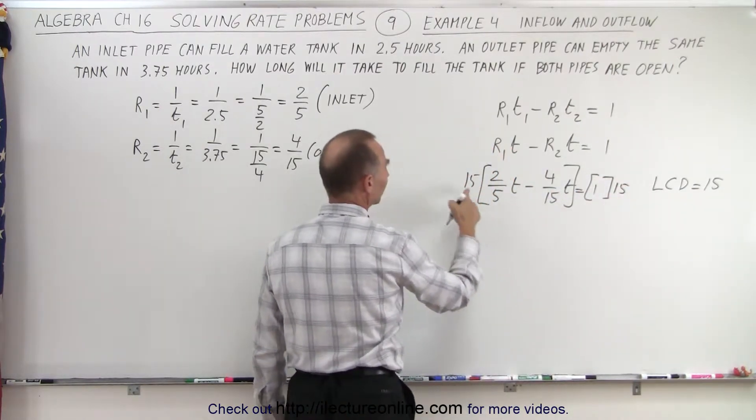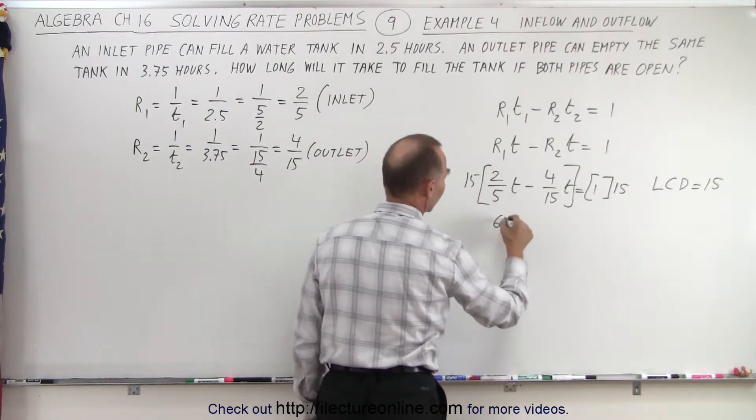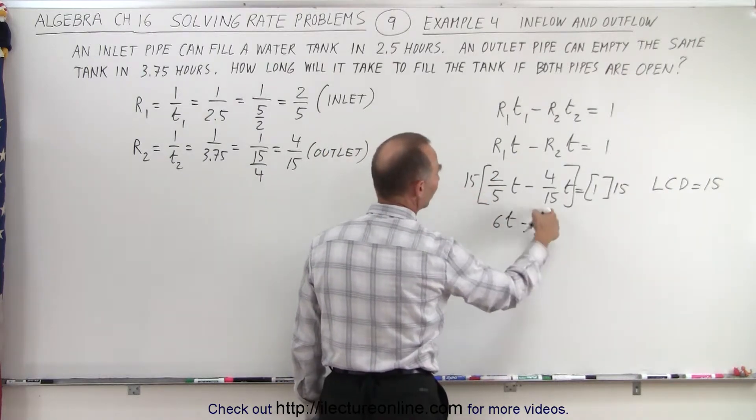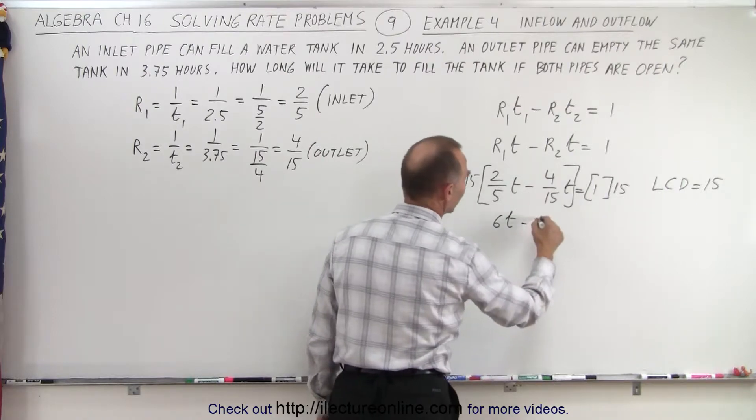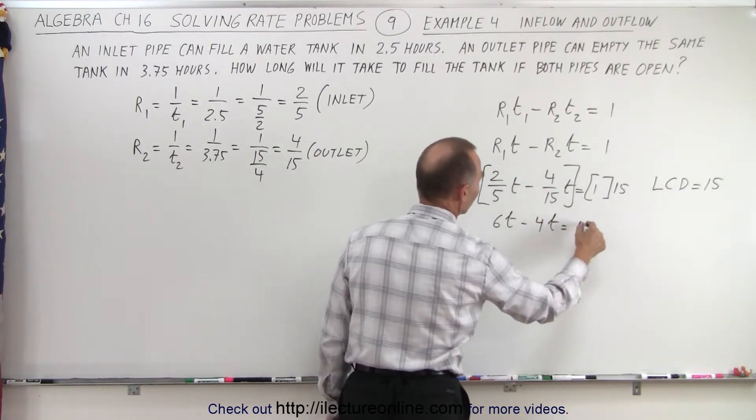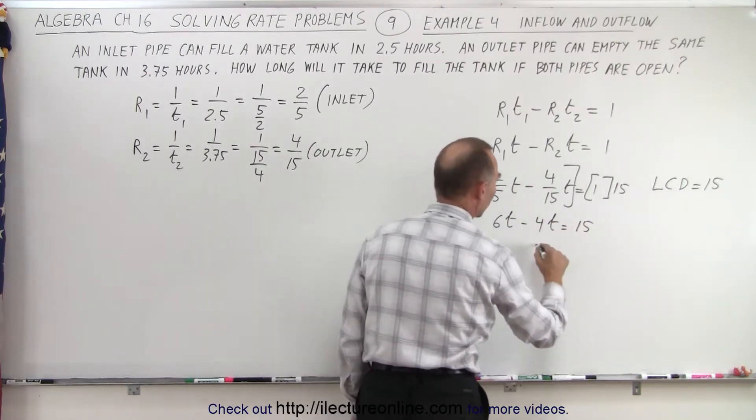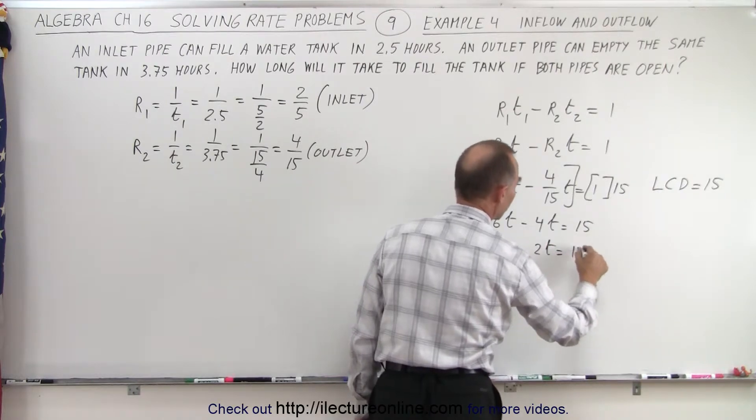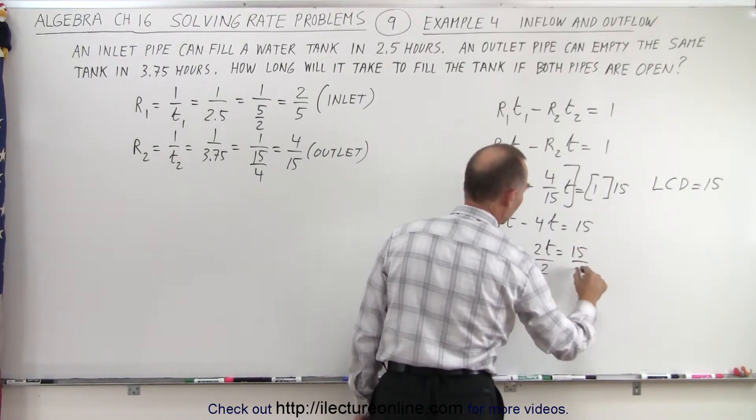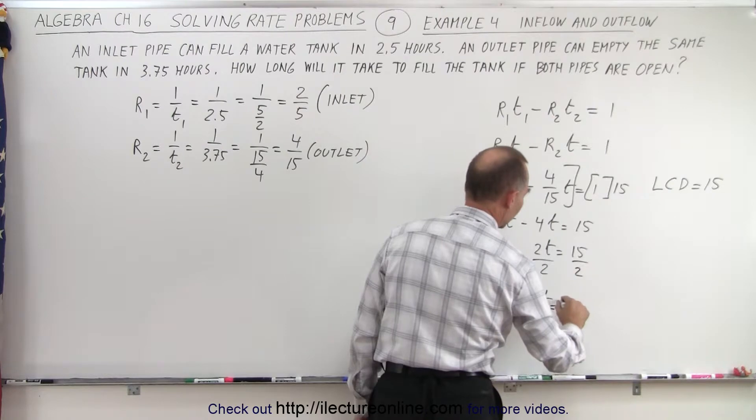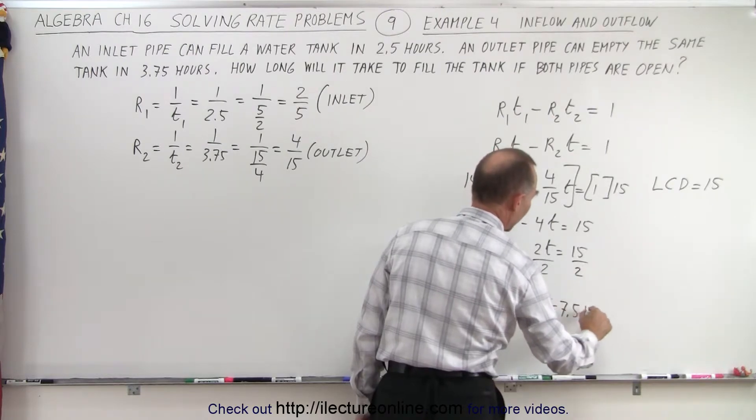5 goes into 15 three times. 3 times 2 is 6. So we get 6T minus 15 goes into 15 once. So 1 times 4 is 4 equals 15. 6 minus 4 is 2T equals 15. Divide both sides by 2, and we get T is equal to 7.5 hours.